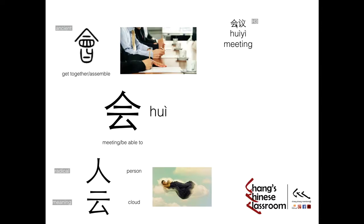Vocabulary: Hui Yi — Hui means meeting, Yi means discuss, a meeting to discuss matters, altogether meaning meeting. Next: She Hui — She actually means association and society, and Hui here probably translates as meeting as well. So this is a meeting and assembly of all associations and societies, altogether meaning society.